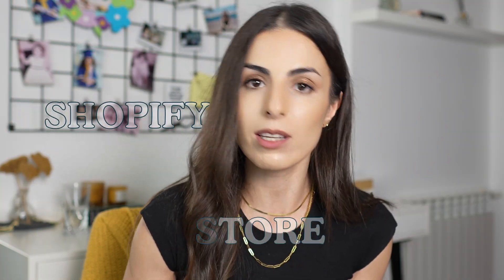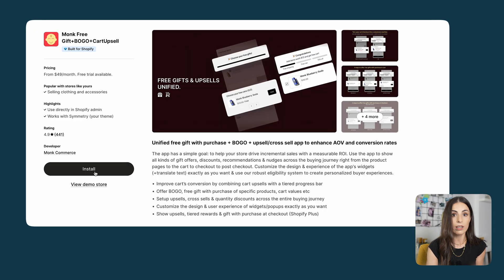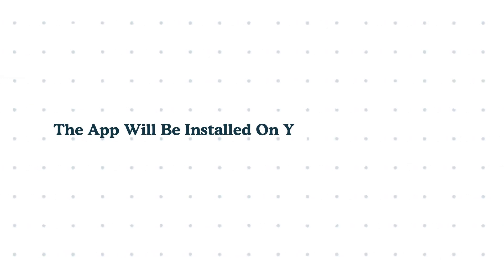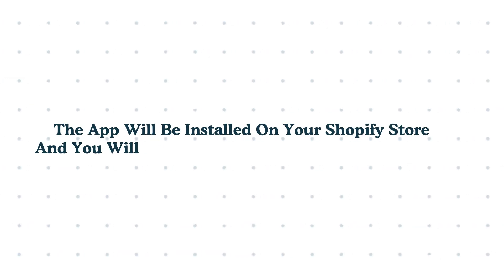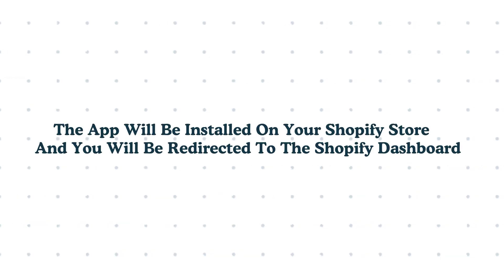The first thing we need to do is to install the Monk app on our Shopify store. In order to do that, you just need to go to the Monk app page and click on install. Once you do that, the app will be installed on your Shopify store and you will be redirected to the Shopify dashboard.